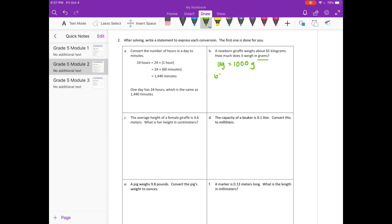So we need to do 65 times 1,000, which would be 65,000. And then our statement, we could say that 1 kilogram equals 1,000 grams. So 65 kilograms is equal to 65,000 grams.